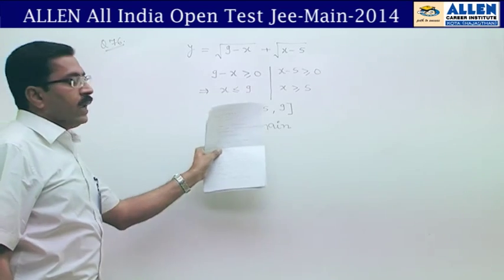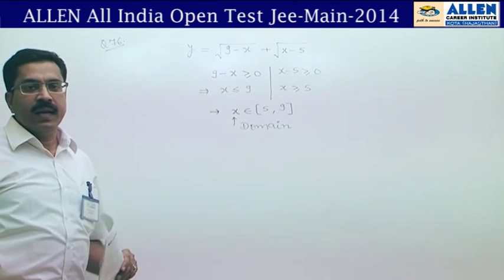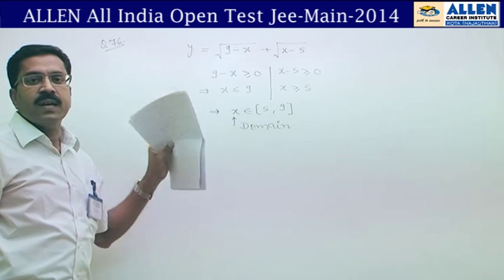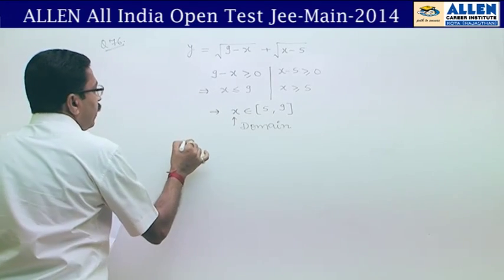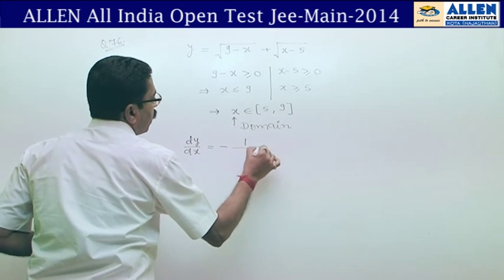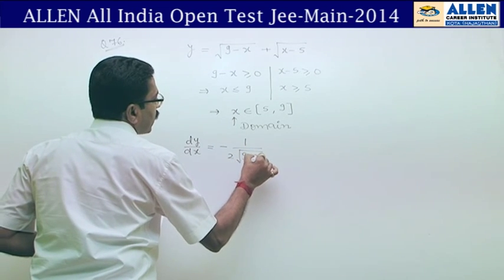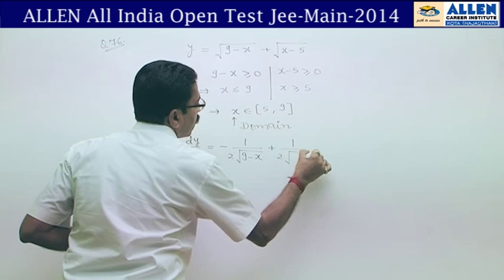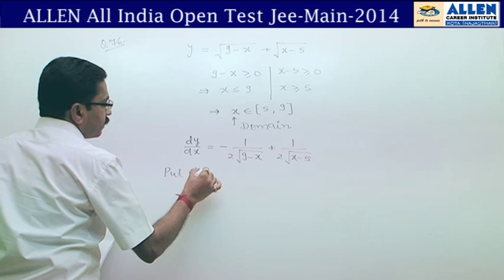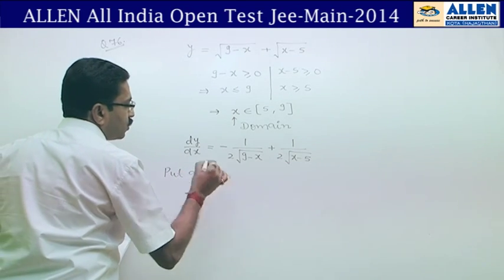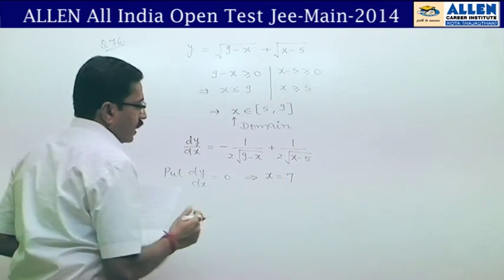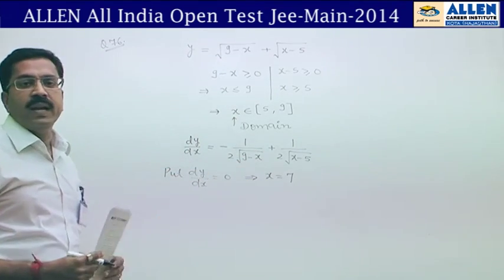When the domain is a particular interval, we calculate the range by checking monotonicity of the function. We calculate dy/dx: dy/dx = −1/(2√(9−x)) + 1/(2√(x−5)). Setting dy/dx = 0 gives x = 7.